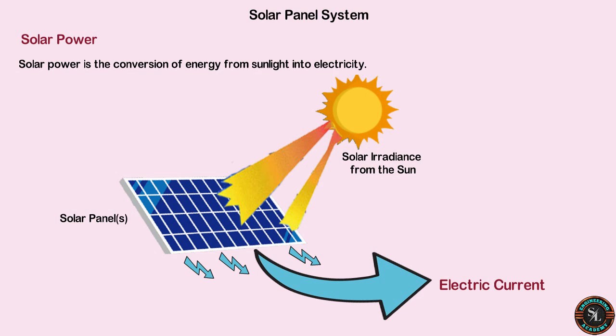By using this system they can reduce their electricity bill, and in the event of a grid power outage they can get electricity from the solar system. Most importantly, solar energy is a truly renewable energy source — it can be harnessed in all areas of the world and is available every day. We cannot run out of solar energy, unlike some other sources of energy.